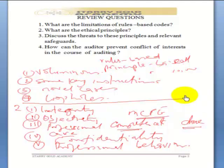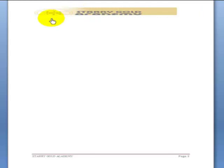The next question says: discuss the threats to the ethical principles and relevant safeguards. This is an examiner's interest, and this question could actually come out when you are writing your exam. So you need to know the threats to the principles — it is very, very key.